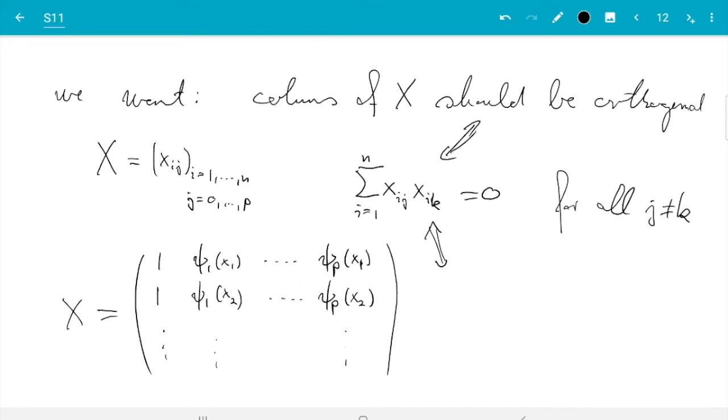And that condition here for orthogonality, if I write it in that notation, then I get sum i from 1 to n, and now row i column j is ψⱼ of xᵢ, and row i column k is ψₖ of xᵢ, that must be 0 then. So, if we can achieve this, then we are good. And to make that complete, what we should do is, we should write ψ₀ of x₁ and ψ₀ of x₂ here, and just say ψ₀ of any x equals 1. Then we have a bit more uniform notation.